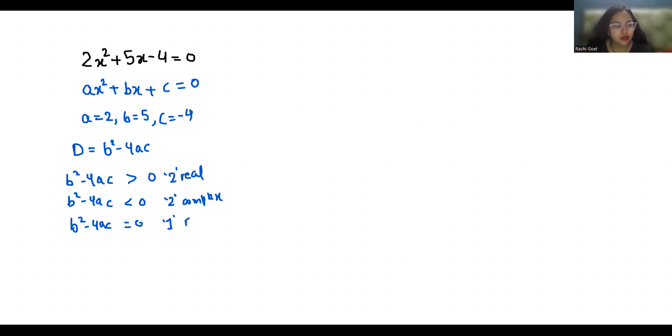So let's find out. D = b² - 4ac. b is 5. 5² - 4 × 2 × (-4). 5² is 25. Minus minus is plus, 4 × 4 is 16, times 2 is 32, which gives us 57, which is positive or greater than 0. That means two real solutions exist.